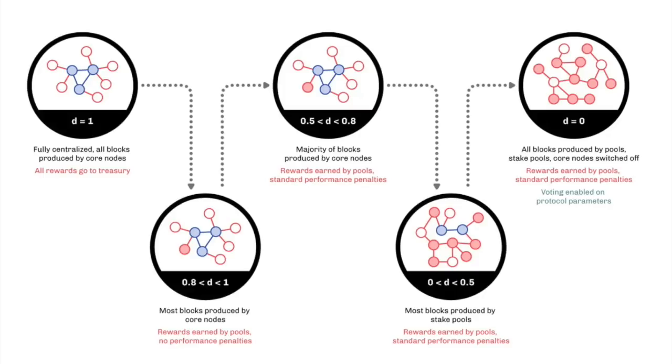When D equals 0.8, stake pools produce 20% of the blocks. At 0.8, more pools, double the number compared to D equals 0.9, will get the opportunity to create blocks and establish themselves. At this level, pools won't suffer in the rankings as long as they create one of the allocated blocks and get rewards. This way, we believe we can start growing the block minting proportion of the network at low network risk.